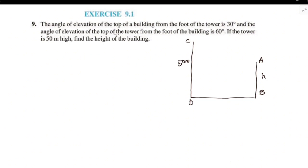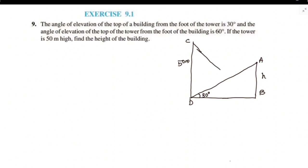The angle of elevation of the top of the building from the foot of the tower is 30 degrees. The angle of elevation of the top of the tower from the foot of the building is 60 degrees. This angle is 60 degrees.